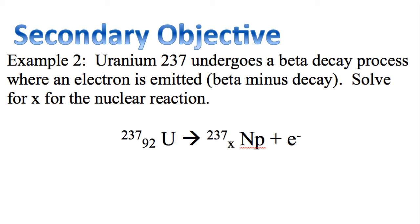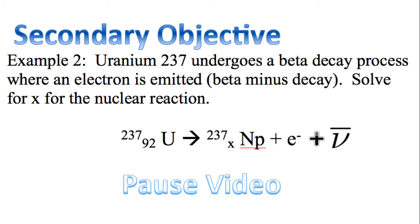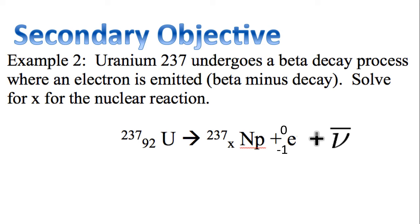Example 2 — uranium-237 undergoes a beta decay process when an electron is emitted: a beta minus decay. Solve for X. When this decay takes place, you should include whether it's a neutrino or an anti-neutrino — in this case, for a beta minus decay, it is an anti-neutrino. For the electron, rewriting with a mass number of zero and a charge of negative one: 92 equals X plus negative one, or X equals 93.